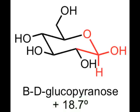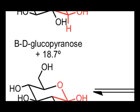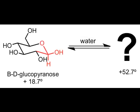To measure optical rotation, we need to place the sugar in homogeneous solution. If we let the sugar sit for a few days in this solution and measure its optical activity again, we see a very different specific rotation value: plus 52.7 degrees.